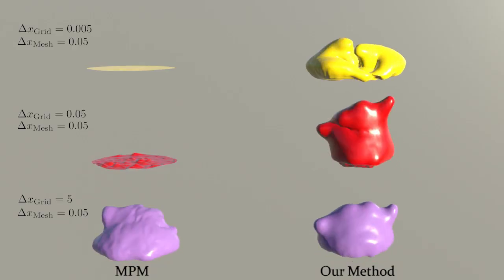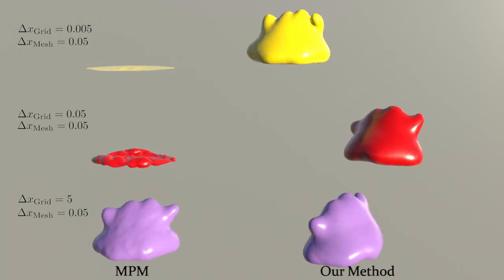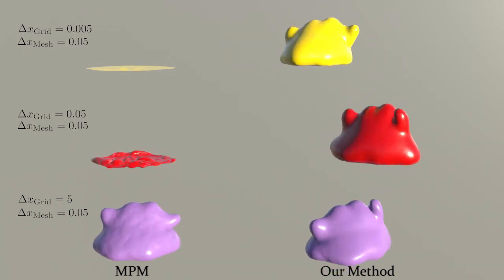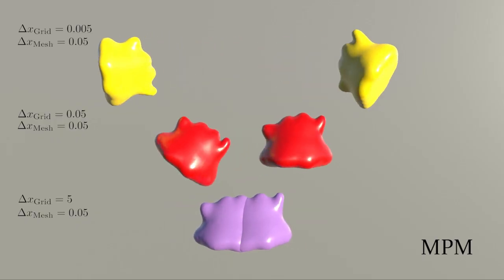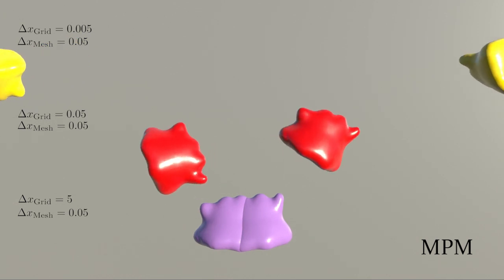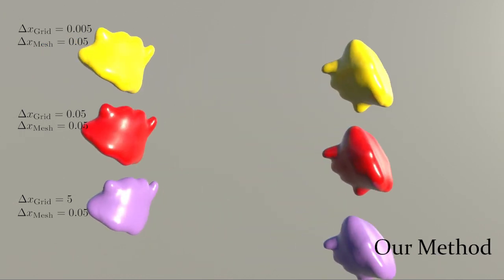We can restore the shape of volumetric objects independent of Eulerian grid resolution. This is another example where MPM suffers from severe cohesion between volumetric meshes. Our new method is free of cohesion.